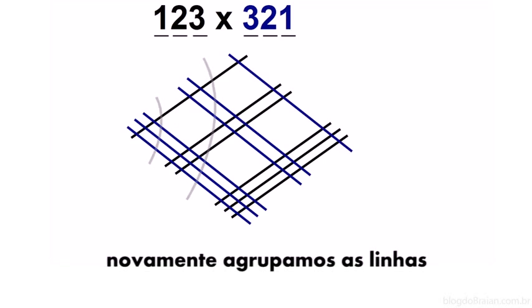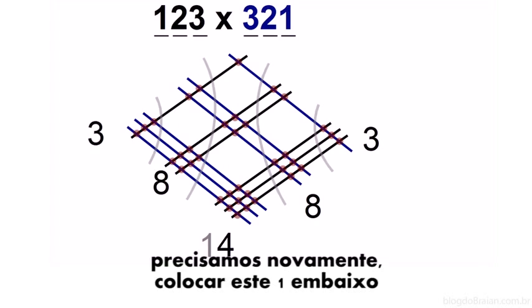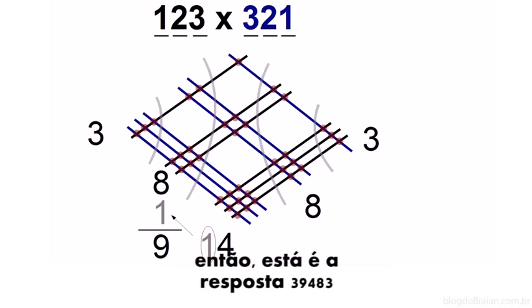We again group the lines. We have three dots here, eight dots here, fourteen, eight, and three. Once again, we're going to have to carry this one over. So that's our answer. It'll be 39,483.